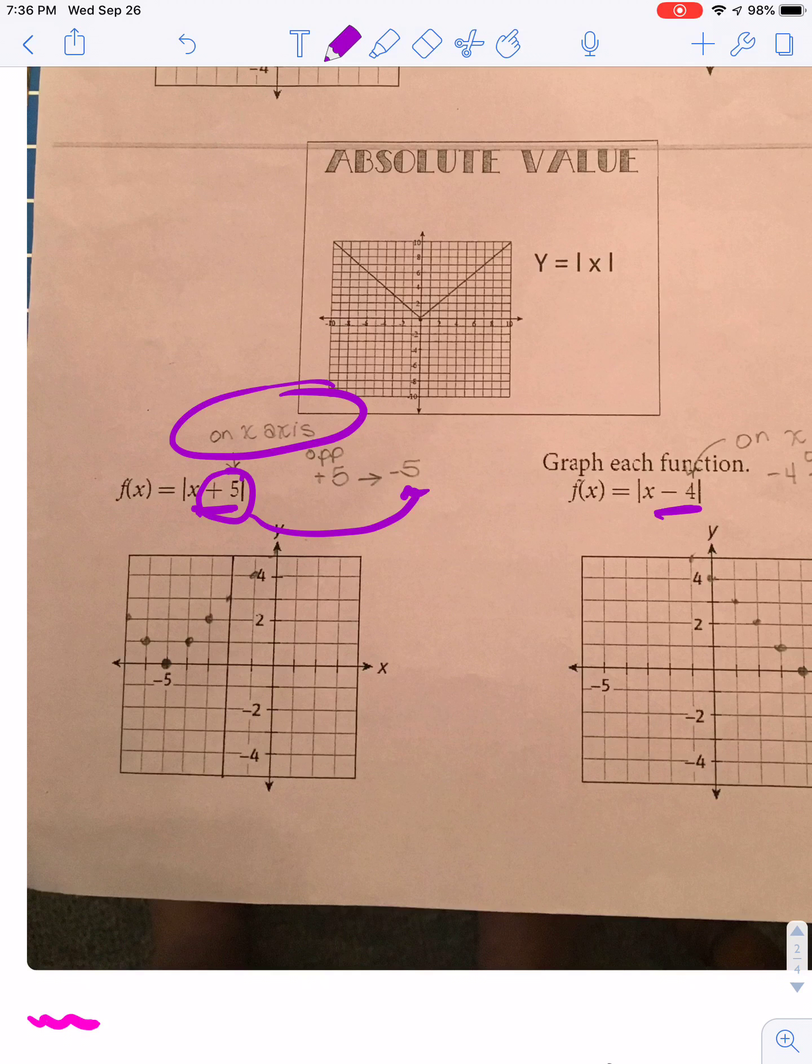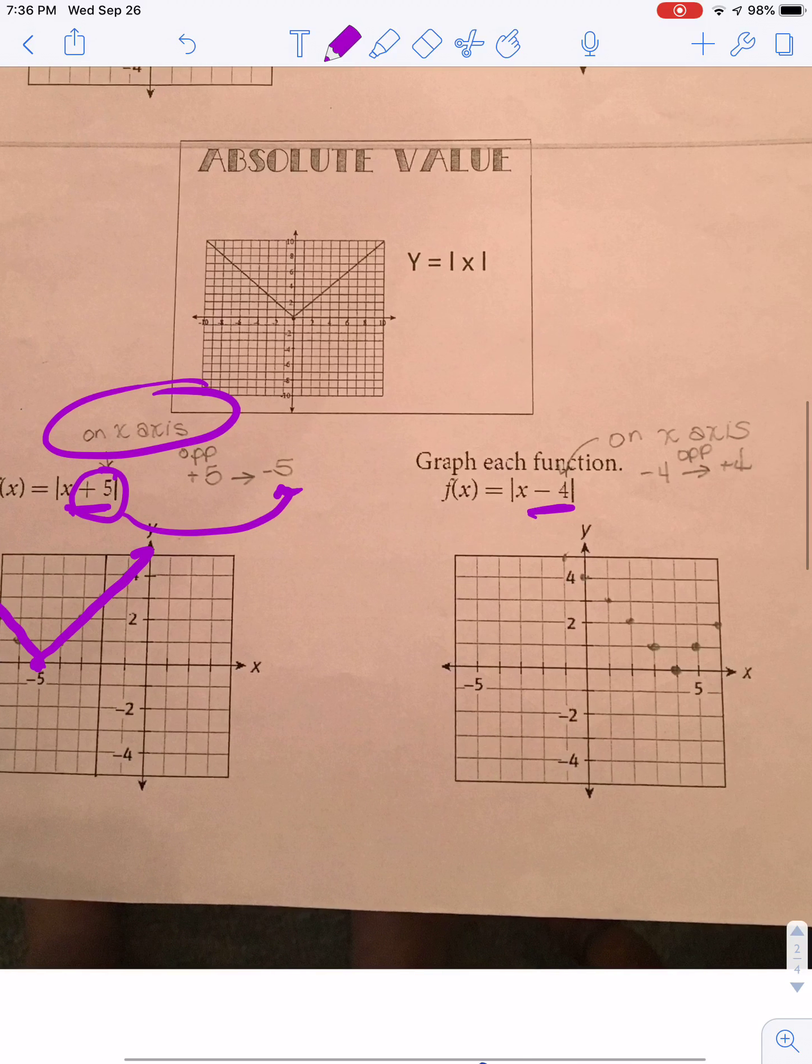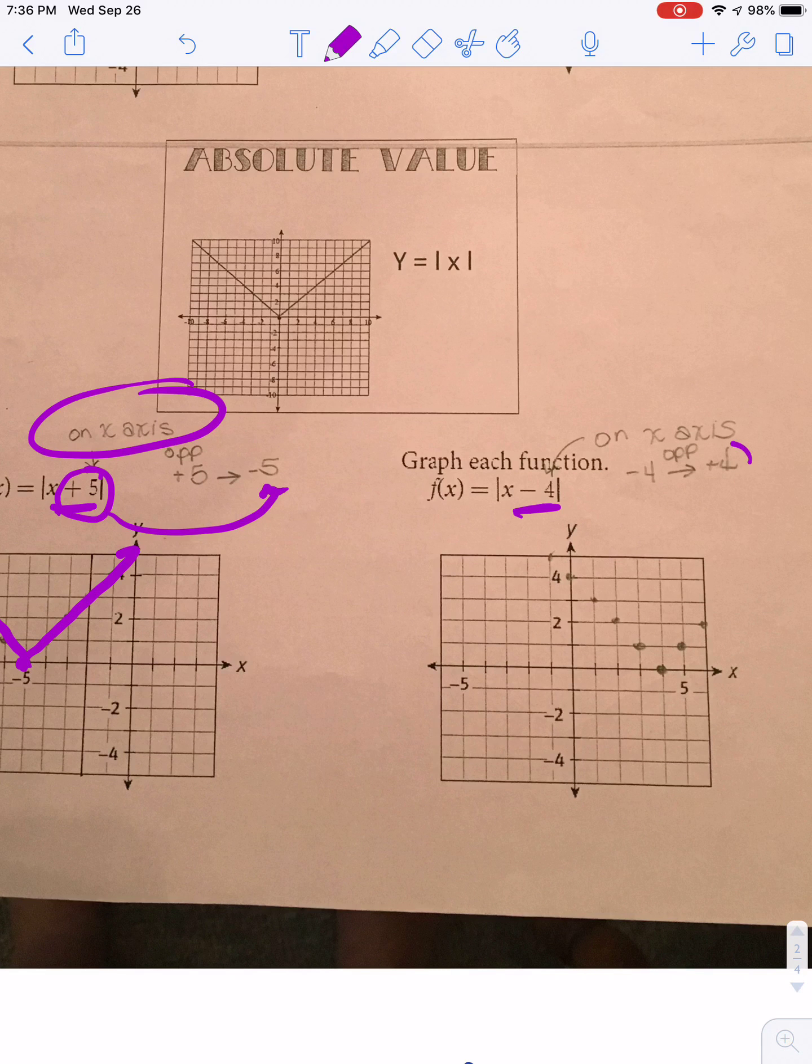So if I go over to here to where negative 5 is, that's where my graph is going to be. On this one, it has negative 4, so it gets shifted to positive 4, so that's there. And your graph would be here.